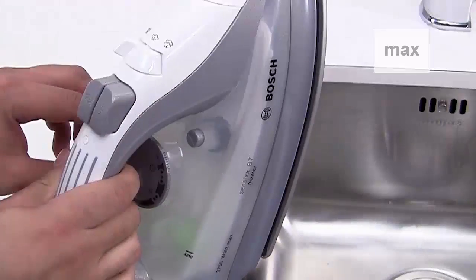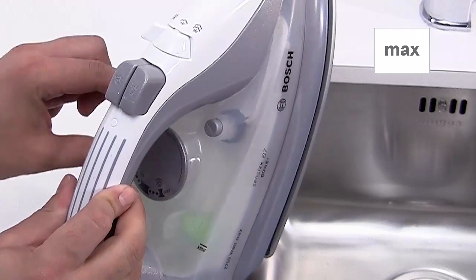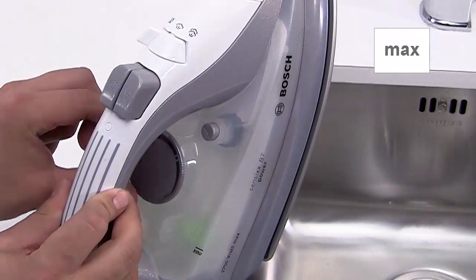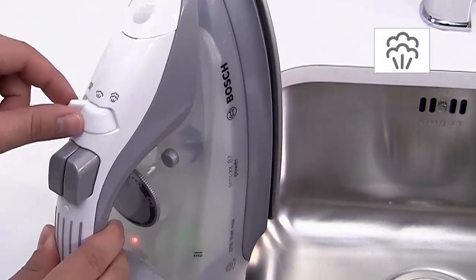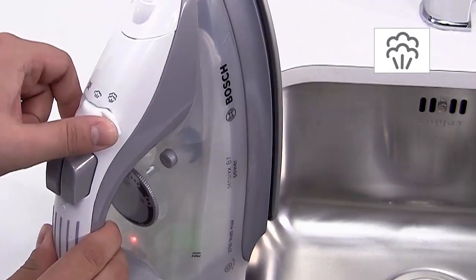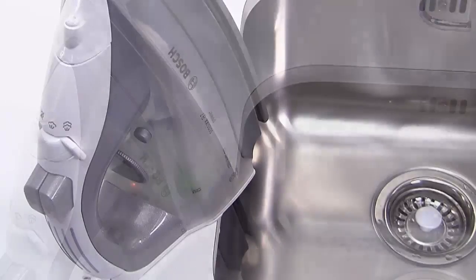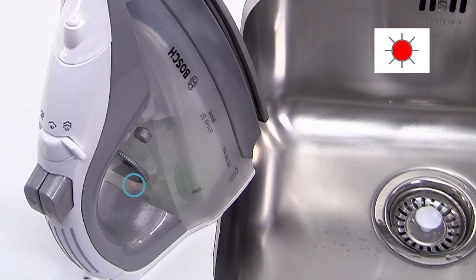Once done, turn the temperature dial to maximum. And turn the steam setting knob to the maximum position. The red light will switch off when the maximum temperature is reached.